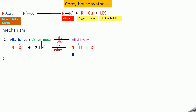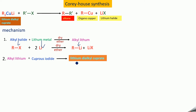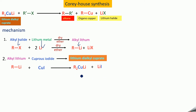In the second step, this alkyl lithium, prepared in the first step, is treated with cuprous iodide (CuI). You will be getting lithium dialkyl cuprate — that is the reagent. You have to take two molecules of R-Li, so you take two molecules to get R₂CuLi. This is the reaction for the second step.